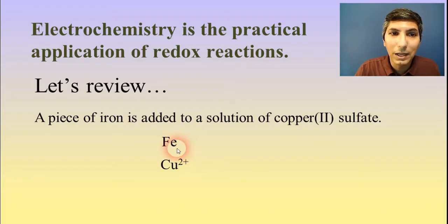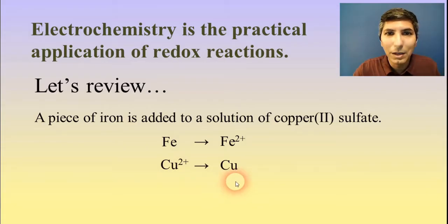Now, what are the products going to be? Well, the metals normally get oxidized into metallic ions. So iron is going to become iron two plus. And the metallic ions normally get reduced down into a metal. So the copper two plus is going to become copper metal.